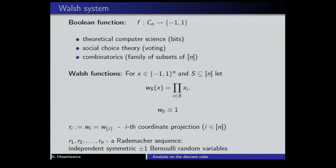Yet another approach to the discrete cube: you can view it as a subset of R^n and consider the discrete cube as the set of vertices — the extreme points of the solid cube. This approach comes rather from functional analysis and convex geometry, and this way of viewing the cube has had some impact on the development of the theory. There are many overlapping ways to view these things, and it is useful to keep in mind all possible ways to view the same thing from different angles.